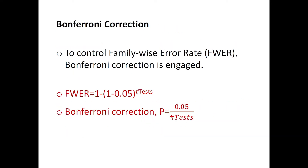Bonferroni correction is applied to control the family-wise error rate. The family-wise error rate is computed using this formula, where 0.05 is the p-value that is traditionally accepted, raised by the number of pairwise tests that are carried out. Bonferroni correction corrects this by dividing 0.05 by the number of pairwise tests.